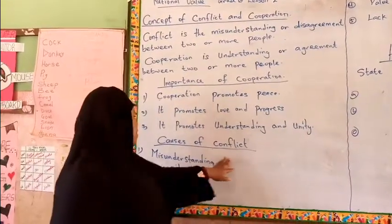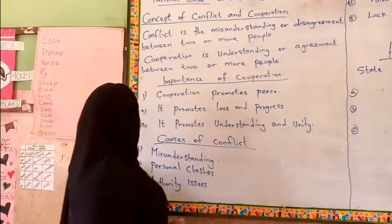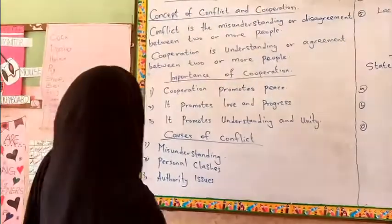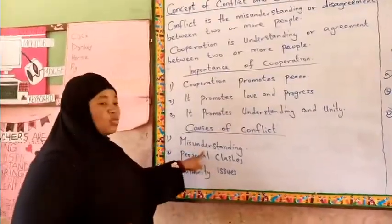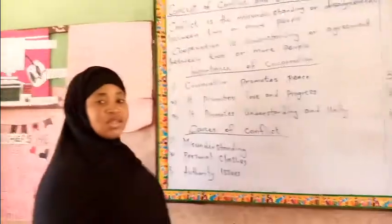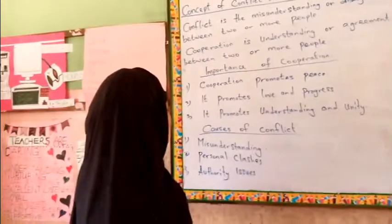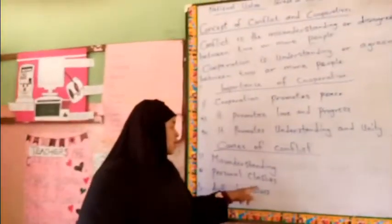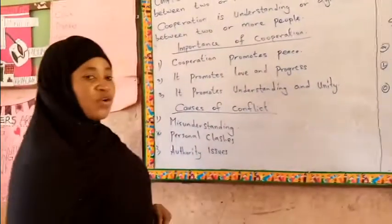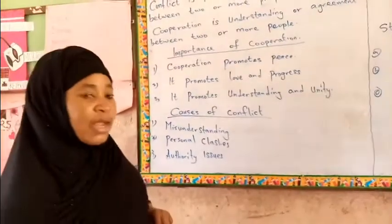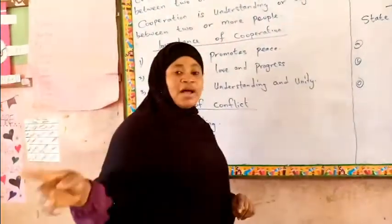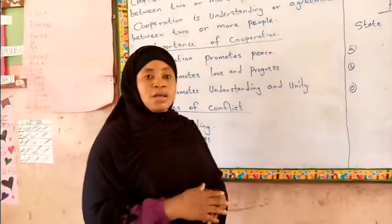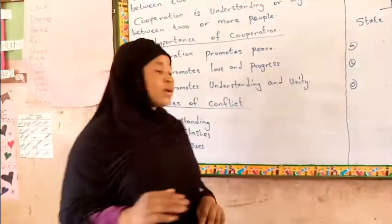Causes of conflict. One: misunderstanding. When we have misunderstanding with ourselves, it causes conflict. Two: personal clashes. For example, when Zeynep and Miriam have issues, they have personal clashes.